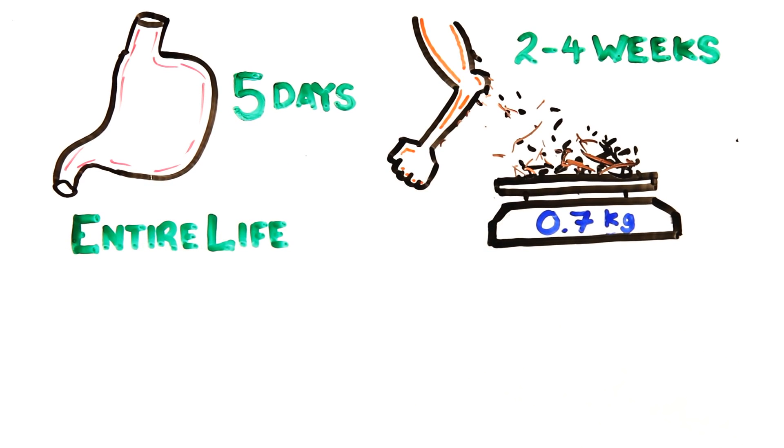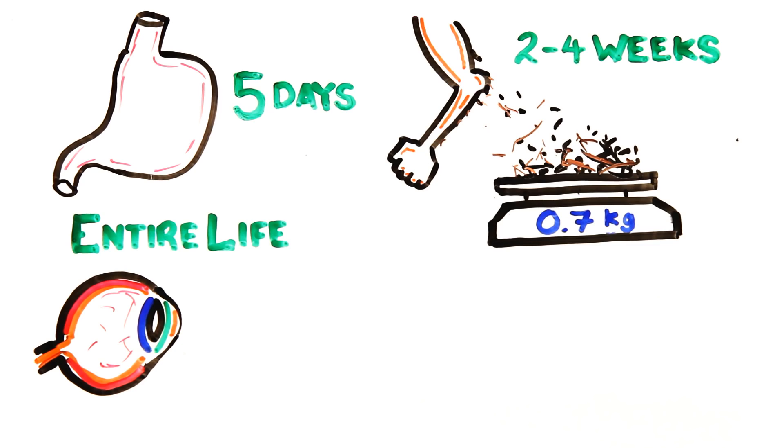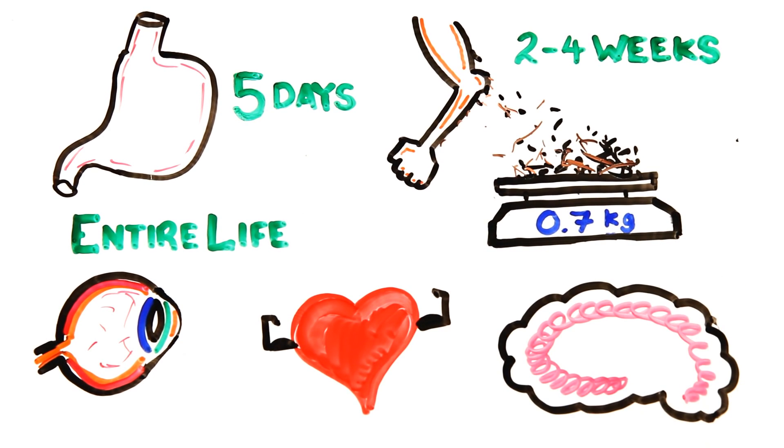Only some cells have been with you your entire life: those of the inner lens of the eye, muscle cells of the heart, and the neurons of the cerebral cortex in your brain, which is largely responsible for your memory.